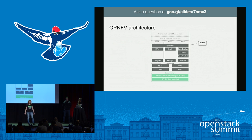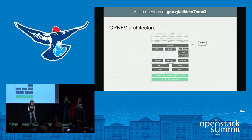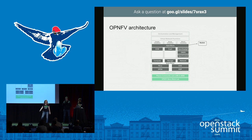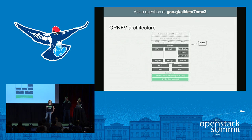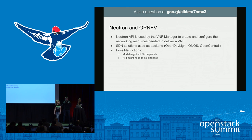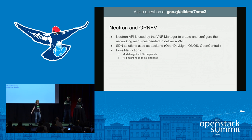The OPNFV architecture mirrors the ETSI diagram. They decided to use OpenStack as the virtual infrastructure manager. There are three fields: virtualization, storage, and networking. Neutron is, of course, the component taking care of the networking. The most common configurations for OPNFV are to use an SDN backend like OpenDaylight, ONOS, or OpenContrail. Neutron provides the API that the VNF manager can use to create and configure network resources to deliver the virtual network function.